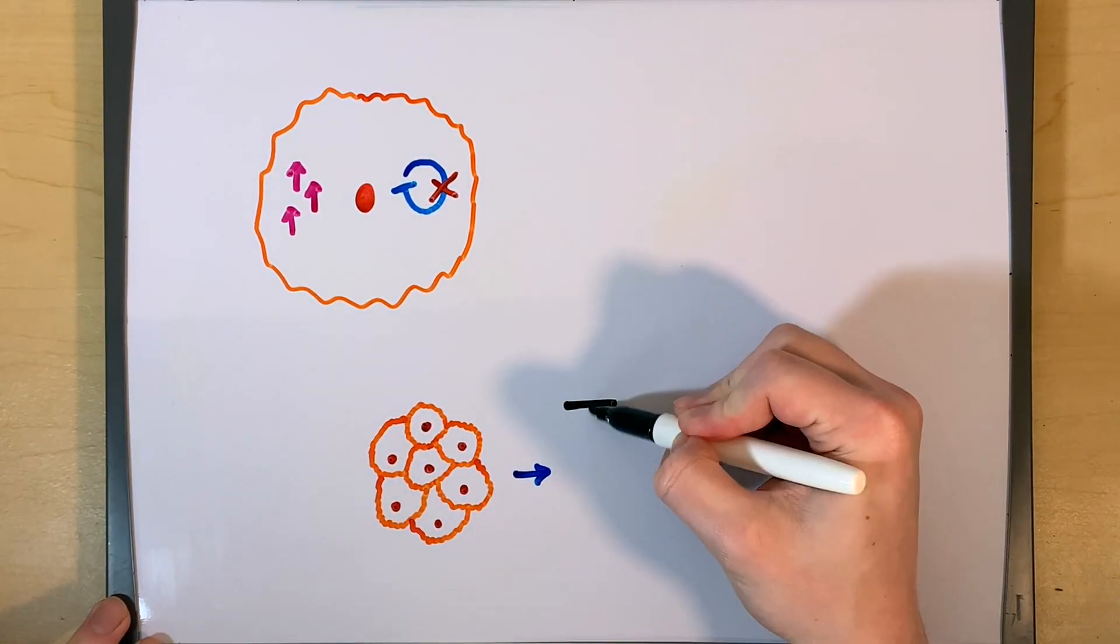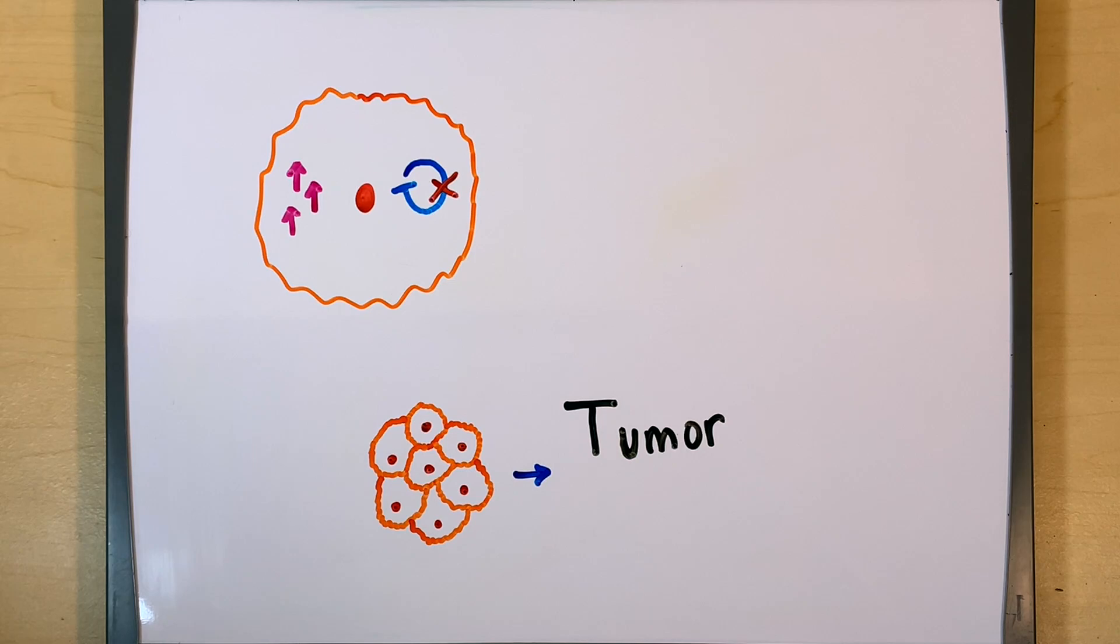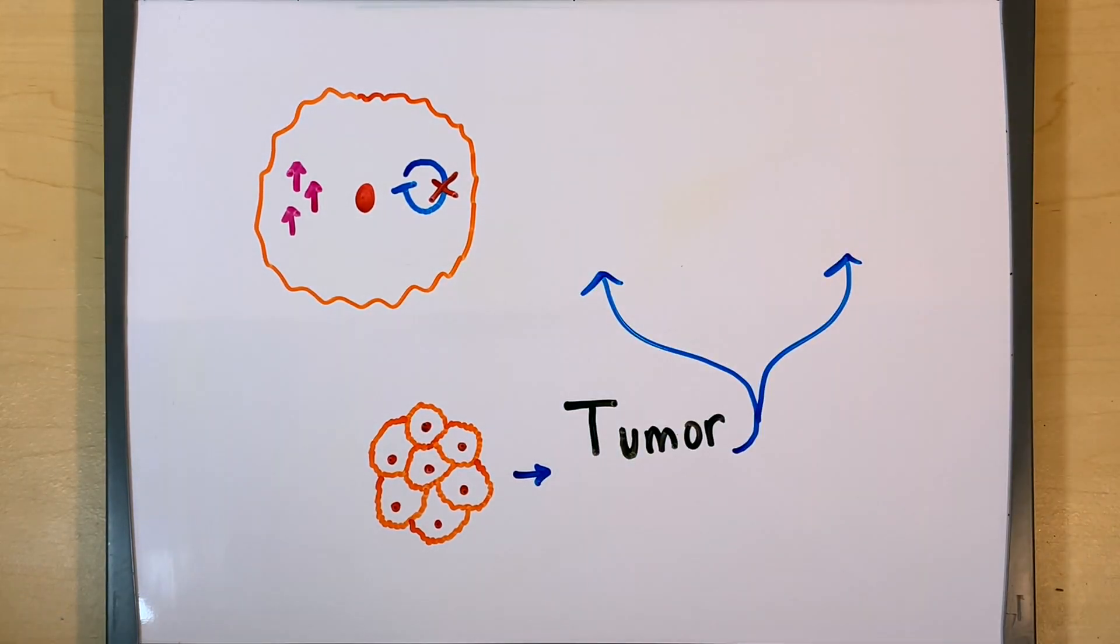When this cell growth goes unchecked, it can result in tumors which have the ability to spread around the body, becoming metastatic.